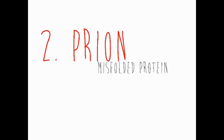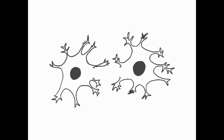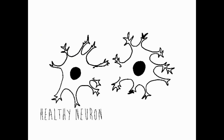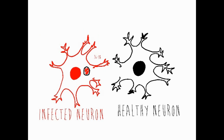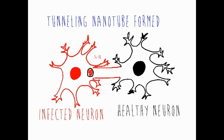Prions are misfolded protein particles which can also hijack the functions of TNTs. When these particles enter a healthy cell, they induce properly folded proteins to transform into the disease-associated prion forms. Prions can be transported from the intestinal entry site to the central nervous system via TNTs formed from neurons, and can be transferred between infected and non-infected neurons. Essentially, prions obtained from eating can be transported with ease into the nervous system.